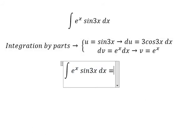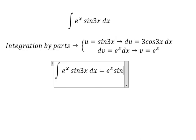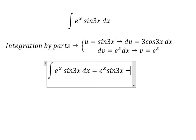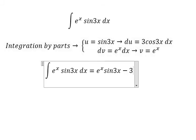Now we have u multiply with v, and negative du multiply with v. So we get negative 3, and we have the integral cos3x e to the power of x dx.